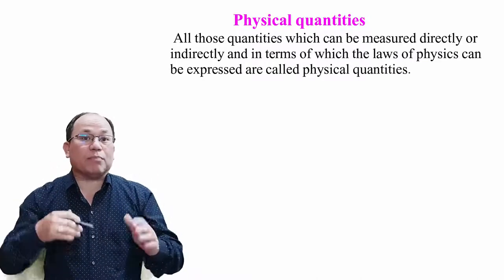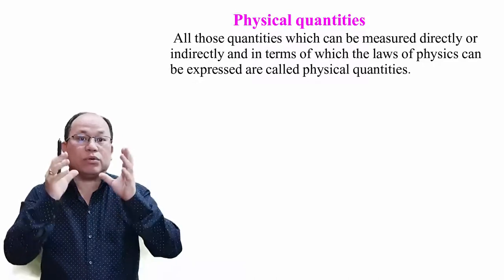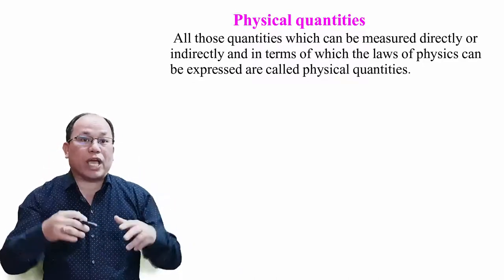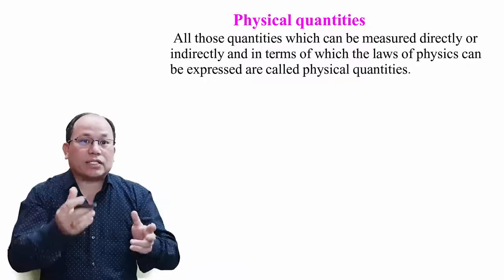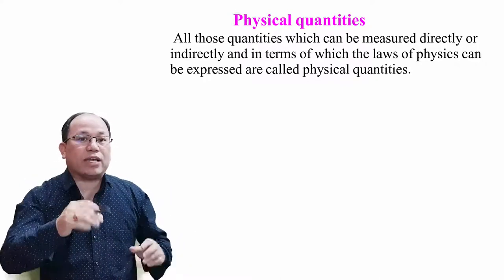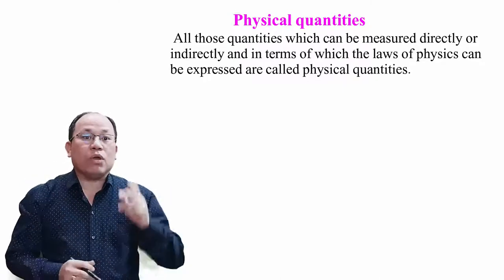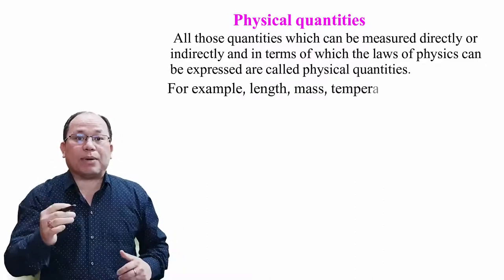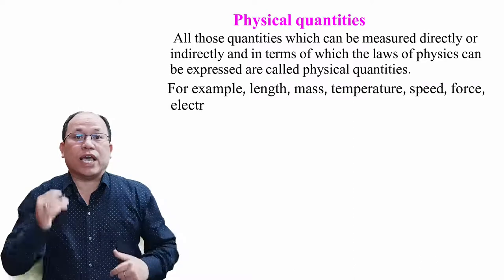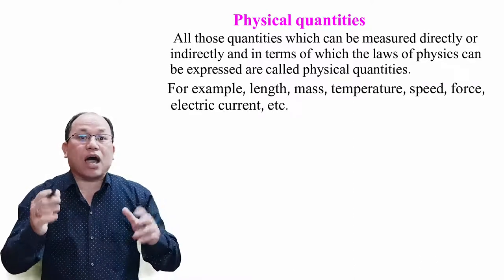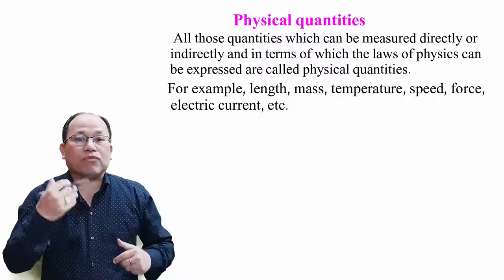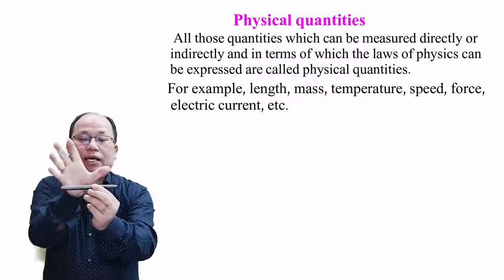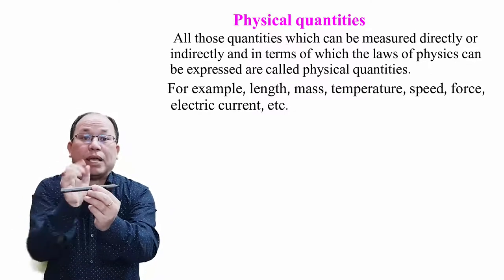Physical quantities are those in terms of which the laws of physics can be expressed. Examples include lamp, mass, temperature, speed, force, electric current, and so on. For instance, the lamp of a pan can be measured — that is a physical quantity.